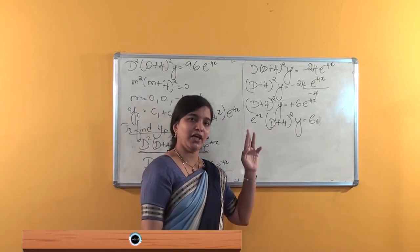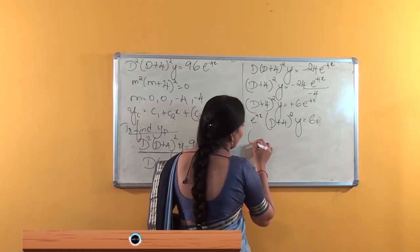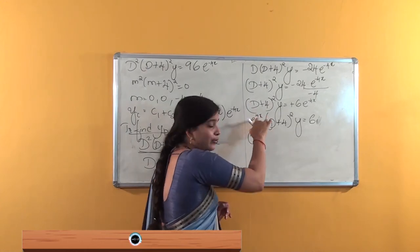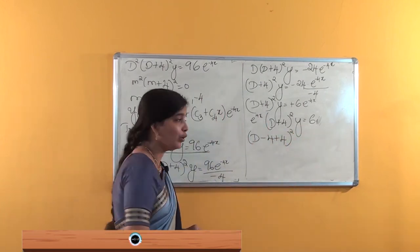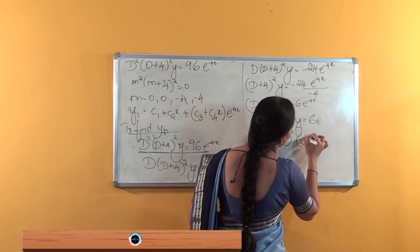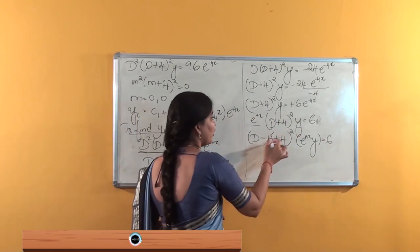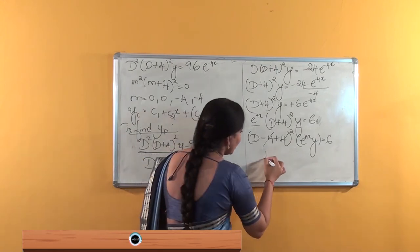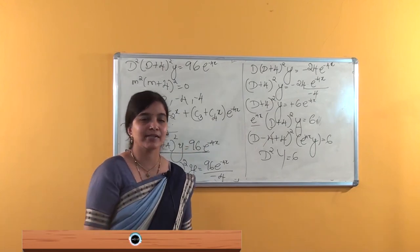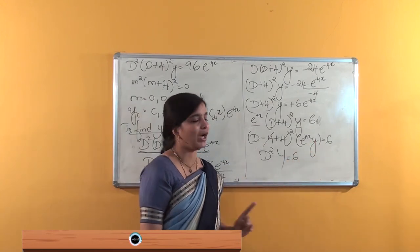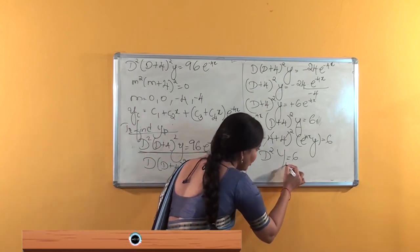Using the rule that f(D) becomes f(D minus a) with a equals 4, we substitute: (D minus 4 plus 4) whole squared into e to the power 4x times y equals 6. The 4 and minus 4 cancel, leaving D squared into capital Y equals 6, where capital Y equals e to the power 4x times y.